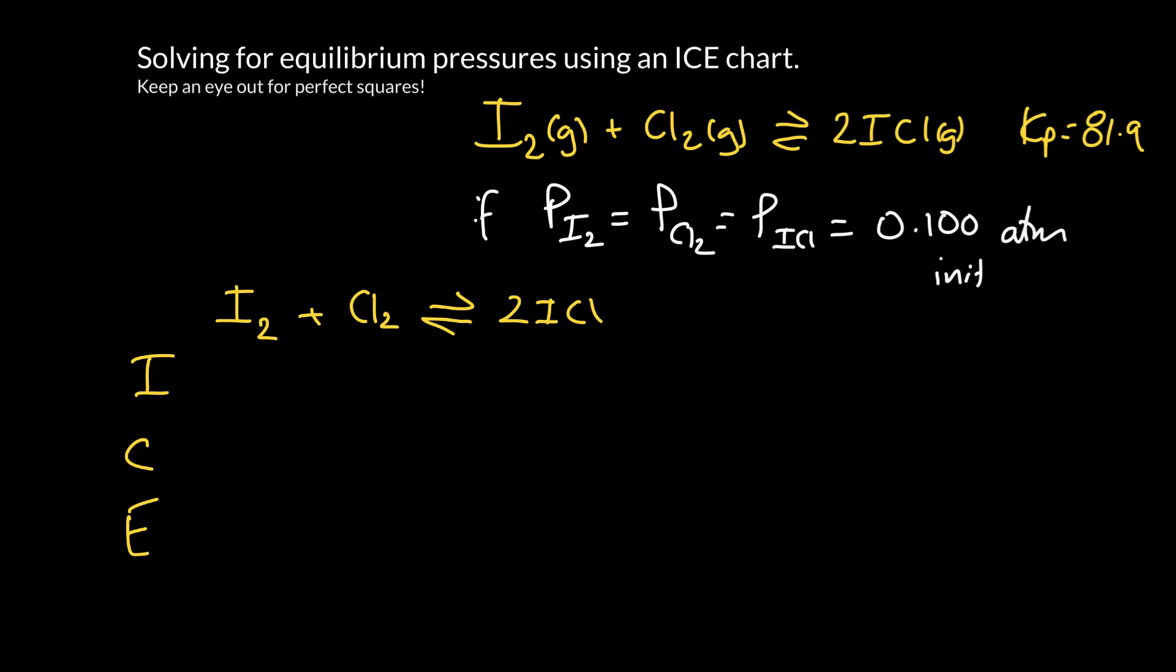In an ICE chart we can use concentrations, we can use moles, or we can use partial pressures. So I'm going to use partial pressures, and I'm going to be very sloppy and just write everything as 0.1.